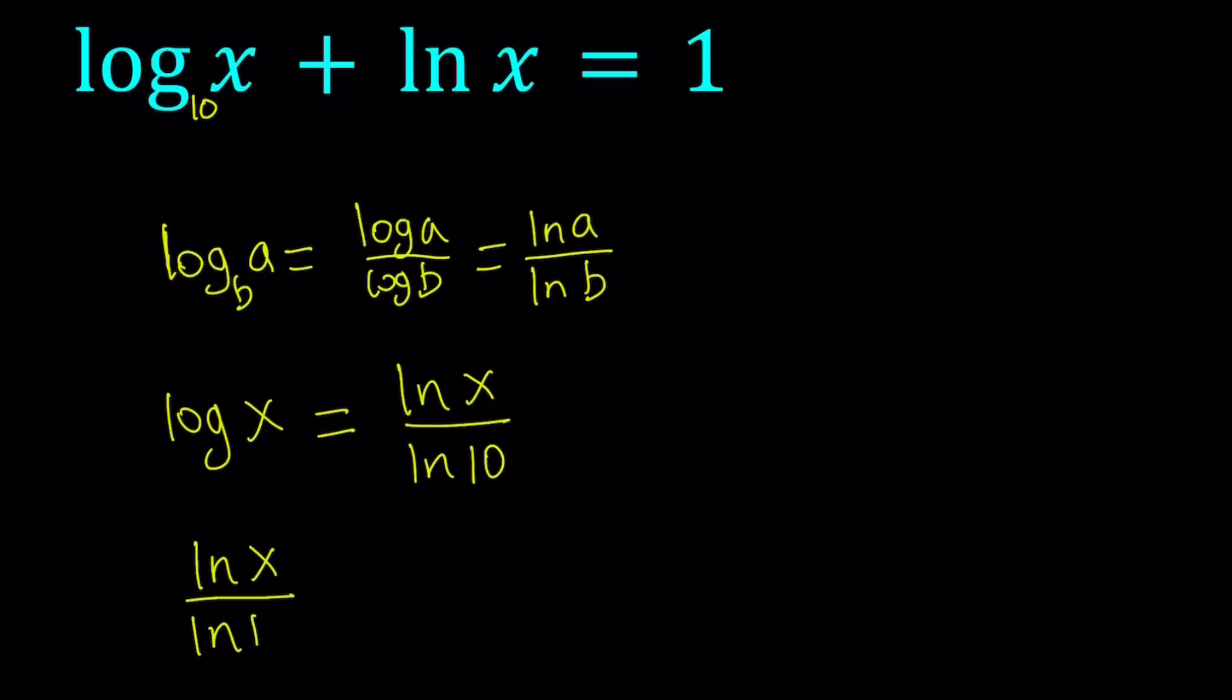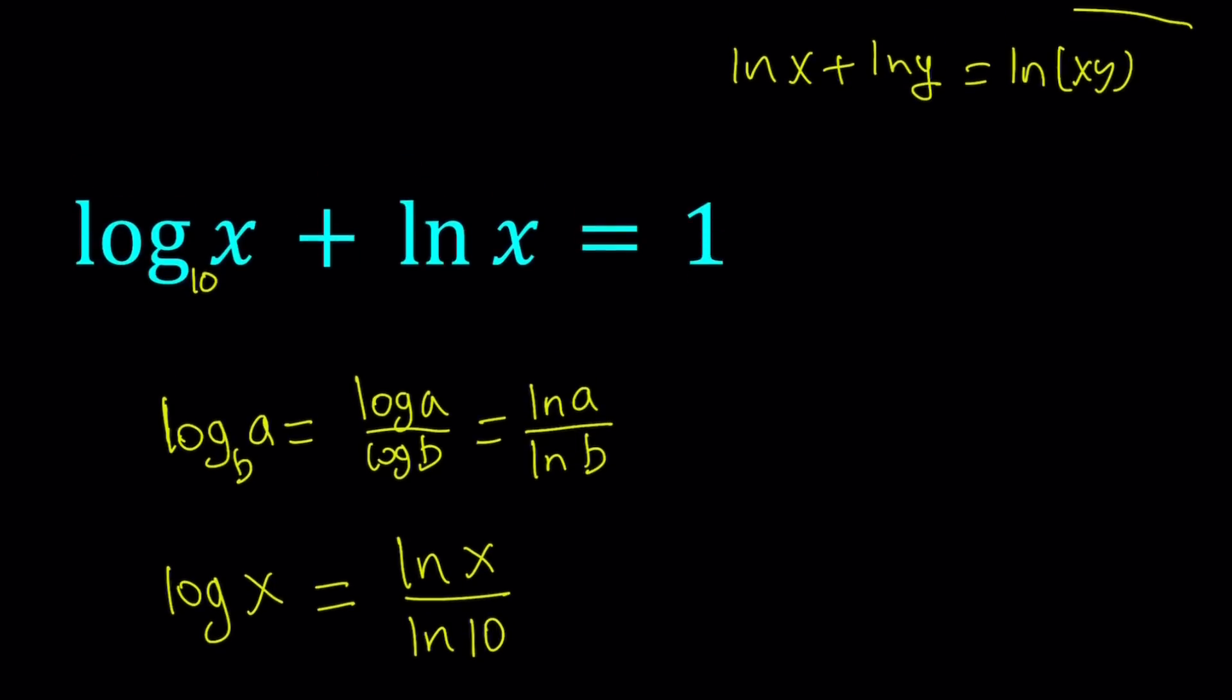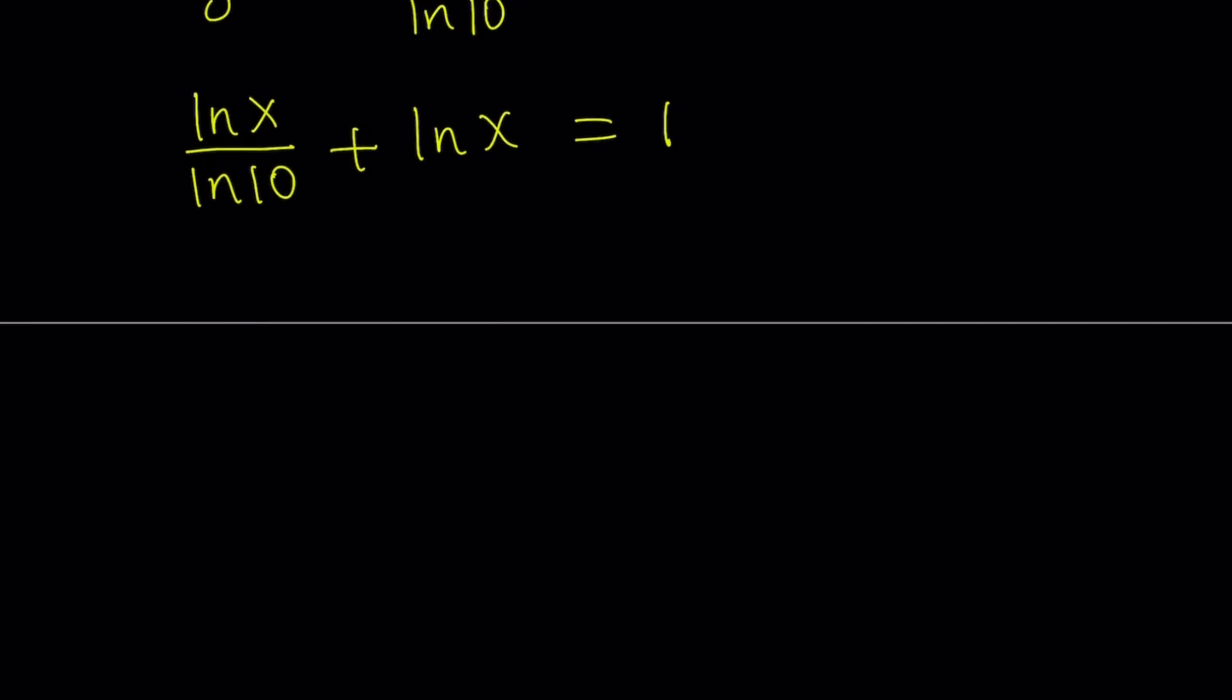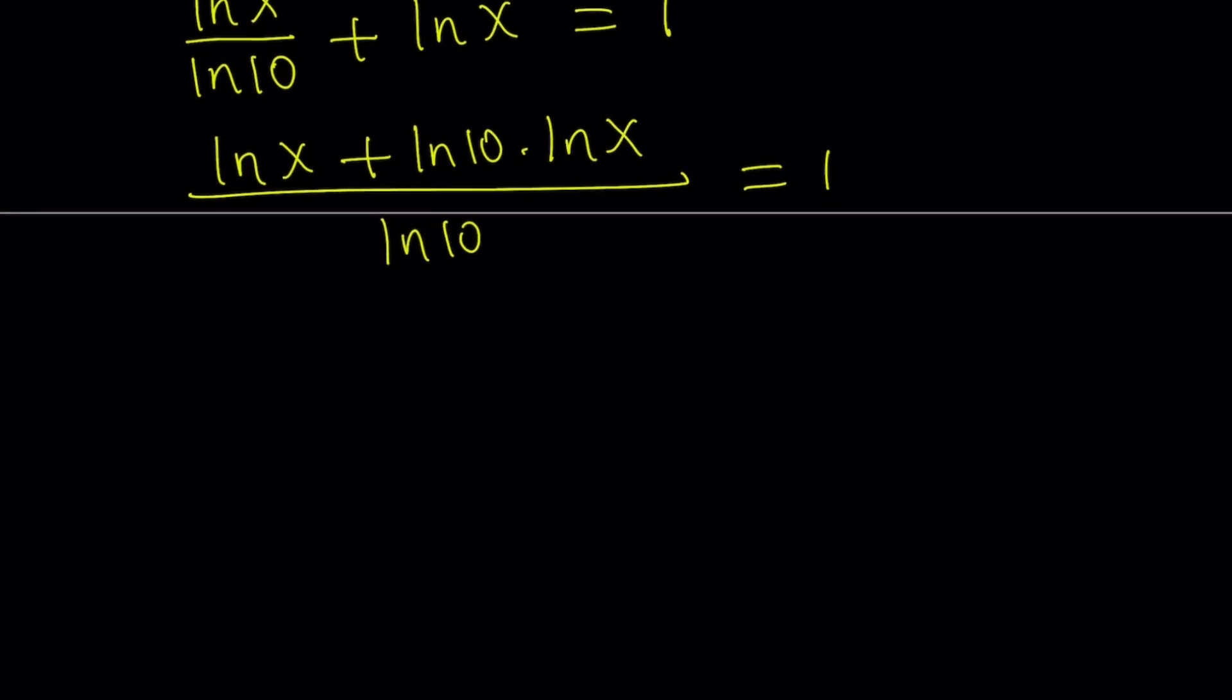See what we get from there. ln x over ln 10 plus ln x equals 1. And again, this is not like the property where we condense logs, but more like, I got the ln x twice, so I can factor it out. But let's go ahead and make a common denominator first. So I can multiply ln x by ln 10, so ln 10 times ln x divided by ln 10 equals 1.